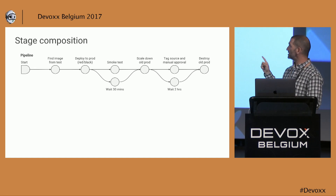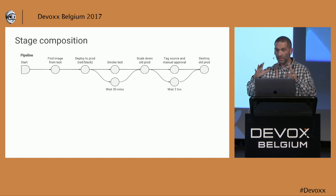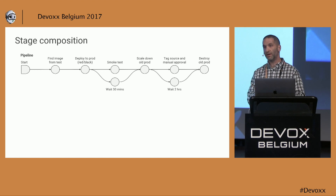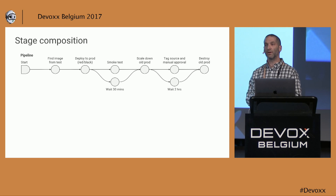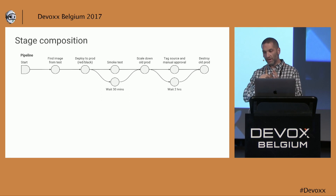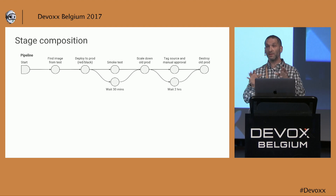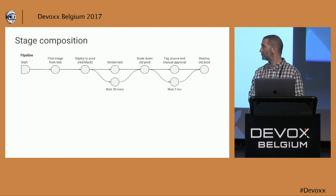One of the key strengths of Spinnaker is that these stages look largely the same from the pipeline construction point of view, regardless of what provider you're targeting — AWS, Kubernetes, OpenStack, Cloud Foundry, Azure, GCE, App Engine, Oracle Bare Metal Cloud — many integrations. The common concepts look the same across clouds. Once you know how to do it for one, it works for all the others and you can mix and match. You often see pipelines that do a bunch of tests and then fan out to push verified code to different clouds or clusters.